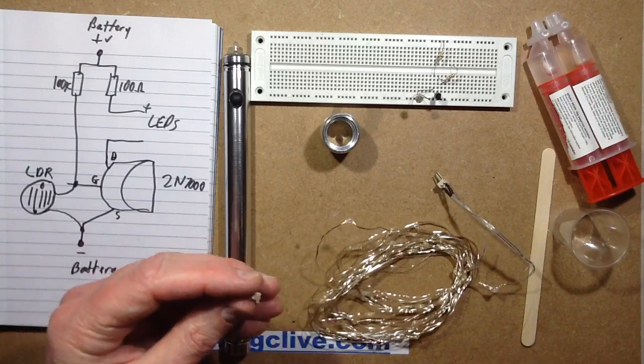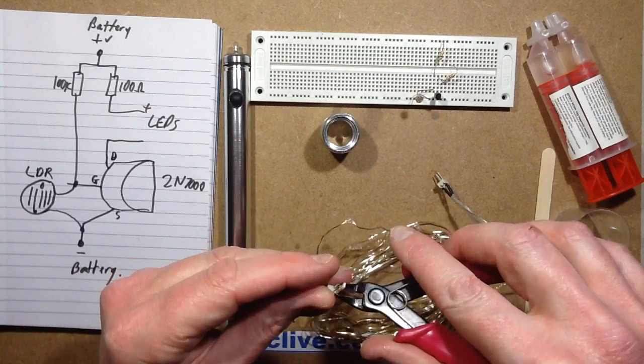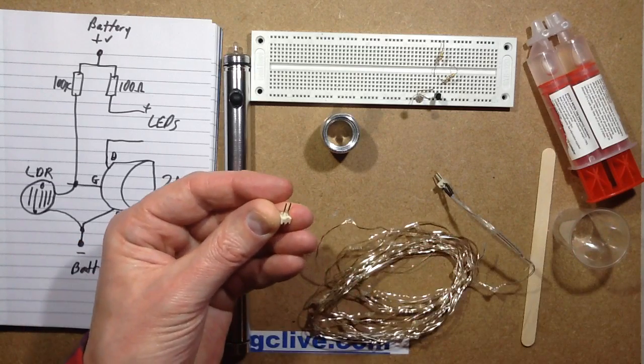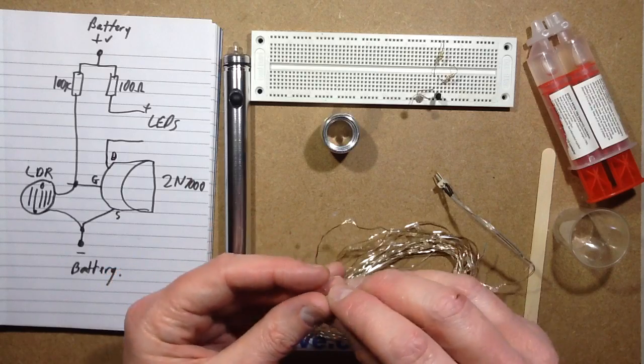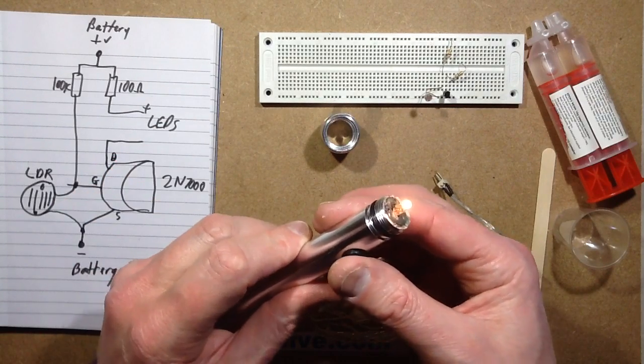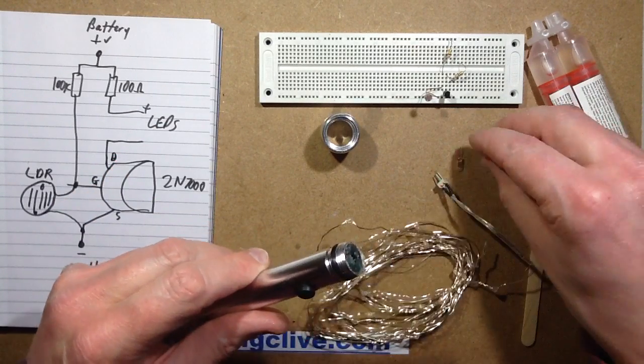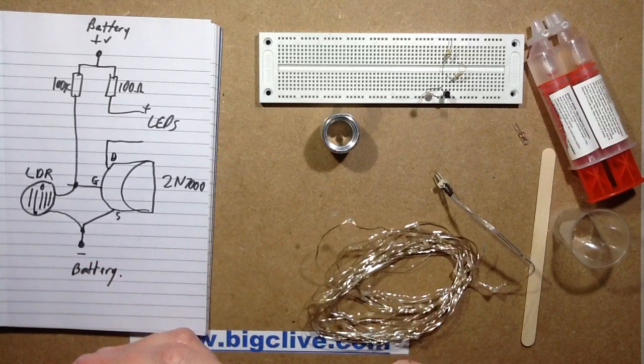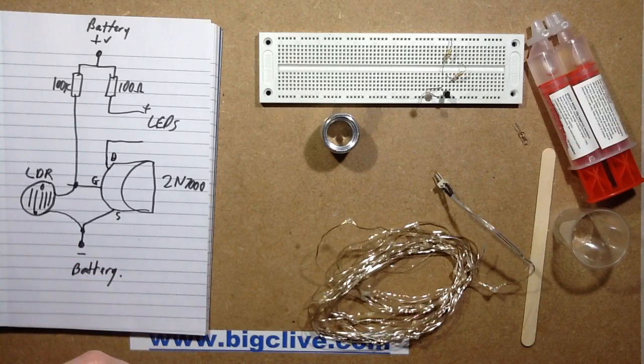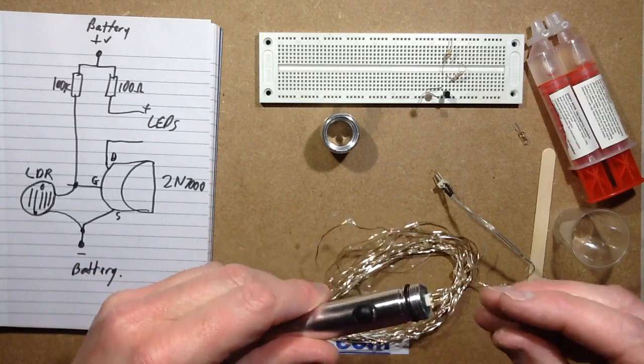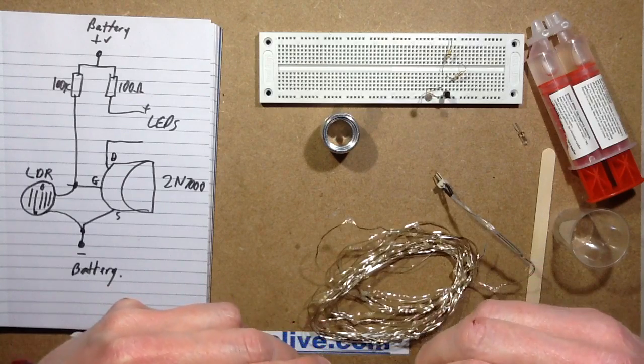This is a little Molex connector, two-pin Molex connector. If you cut the little polarization lug off it, it's quite handy that in these torches you can just jam it down where the lamp went and it makes a handy connection, like that, because I used that as the base to build the circuit up.